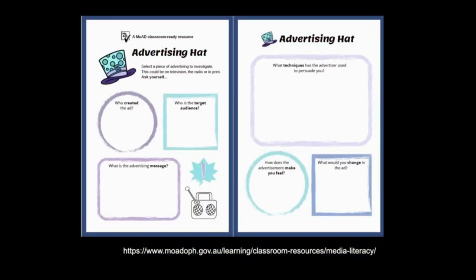To show you what this might look like in practice, here is a classroom activity worksheet created by one of the AMLA members, the Museum of Australian Democracy. This was created for year five to six students, and they were designed to support teachers to start a critical thinking conversation with their students about different media. This is a straightforward use of the framework's key concepts, whereby students are asked questions like: who created the ad, who is the target audience for this ad, what techniques have been used to persuade you, and how does the ad make you feel?